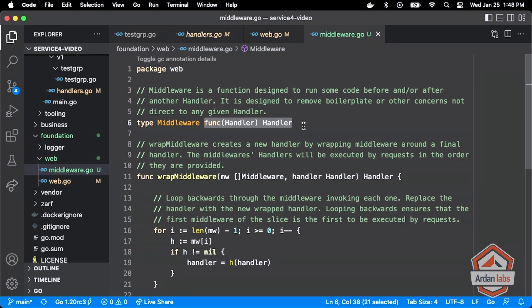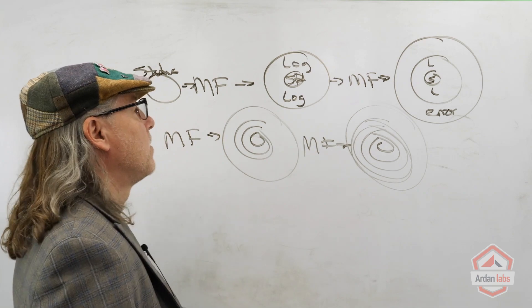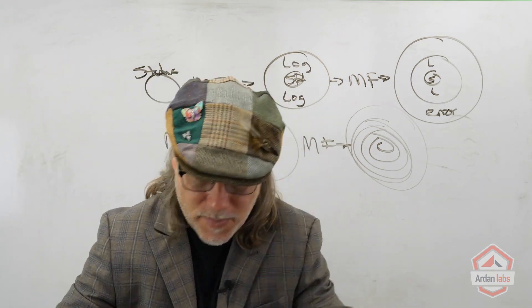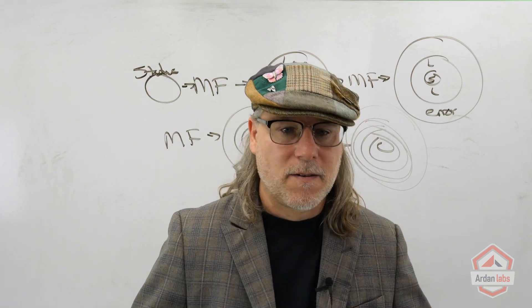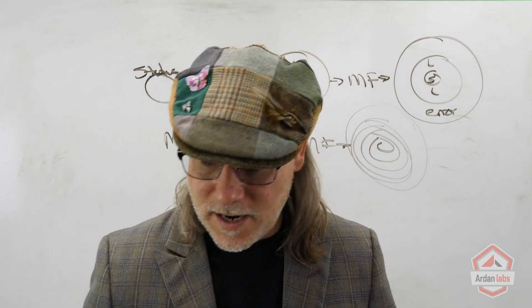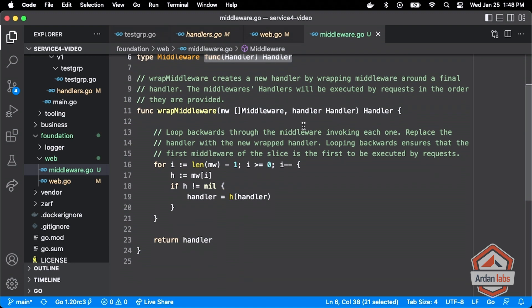We're going to have several middlewares that we want to wrap: logging, errors, metrics, panics, auth. We're going to want to pass these different functions in at the same time, so we wrote a convenience function called wrap or middleware.